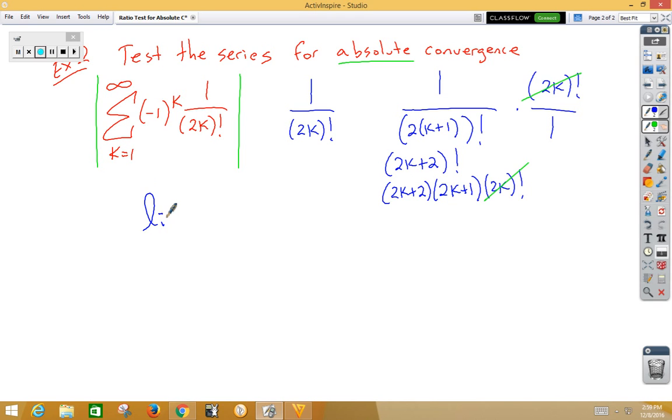Now we've got the limit as k approaches infinity of 1 over 2k plus 2, 2k plus 1. That's going to be a low high, so low high is always 0. 0 is less than 1. So, this series also converges absolutely.